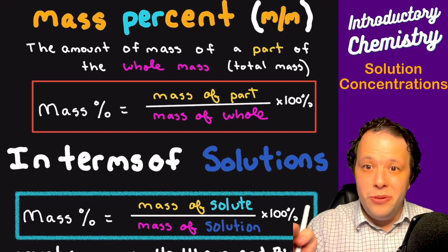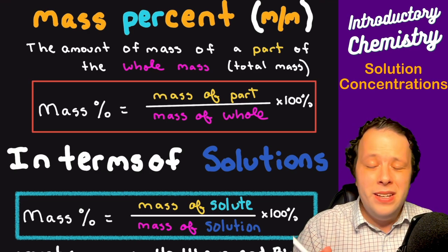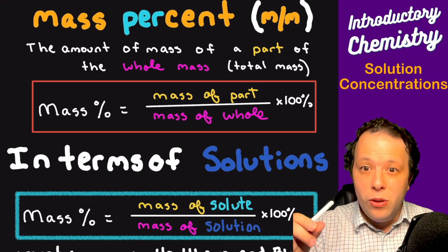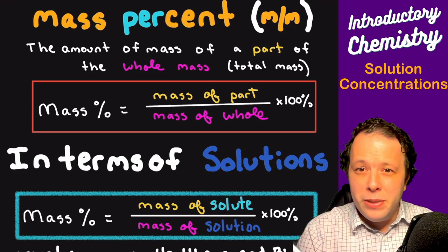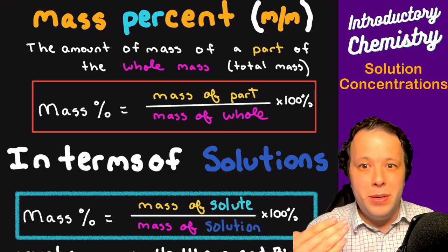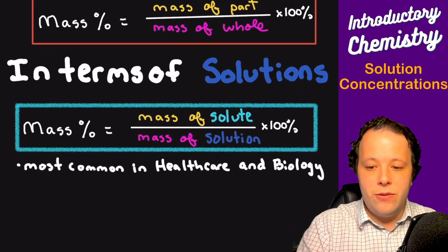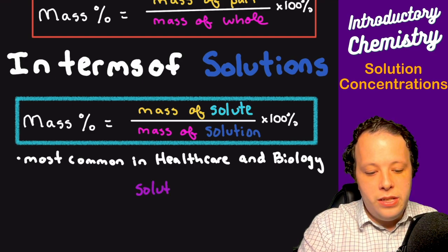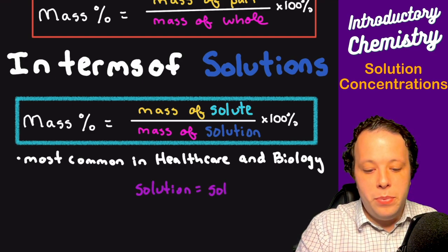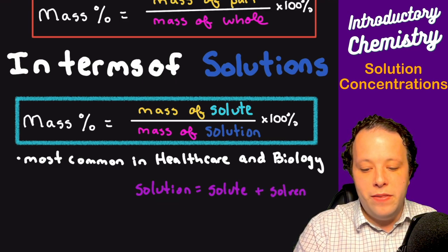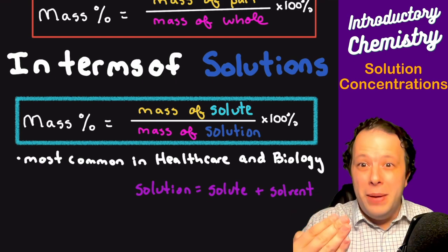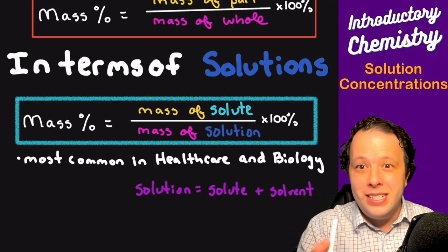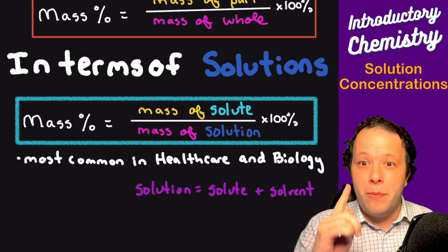So if I have water and I sprinkle sodium chloride in it, sodium chloride would be the solute. The solution is more complicated because it's not the same thing as the solvent. Remember: solute, solvent, and solution are all different terms. The solute is the minor part. The solution equals the solute plus the solvent — it's the mass of both components added together, because it's the part over the whole entire picture. So just remember: part over the whole.